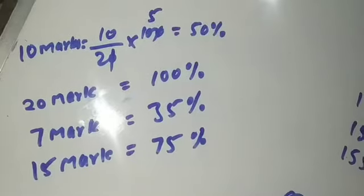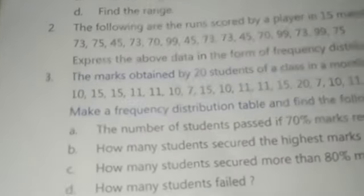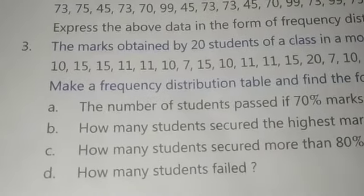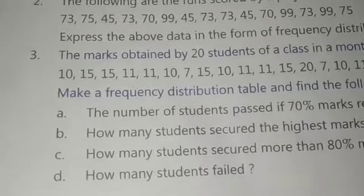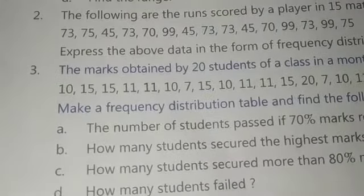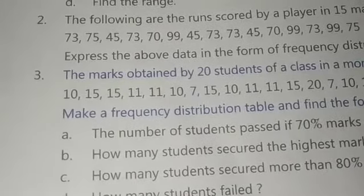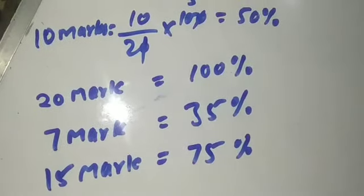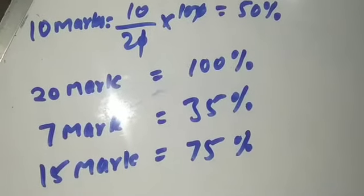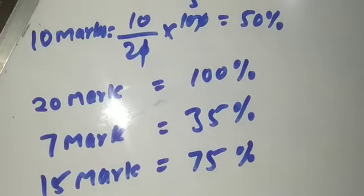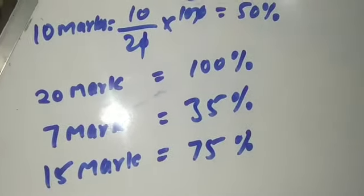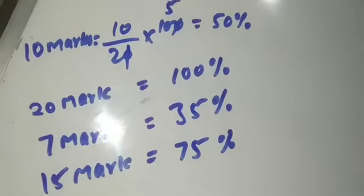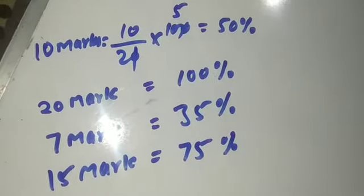As given in Question 3, you need to find percentages. You can easily calculate them: if a student scored 10 marks out of 20, multiply by 5 to get the percentage — so 10 marks = 50%. Similarly, 15 marks = 75%, 20 marks = 100%, 7 marks = 35%. In this way you can easily find the number of students. This finishes Exercise 16.1. In the next video we will do Exercise 16.2. Thank you.